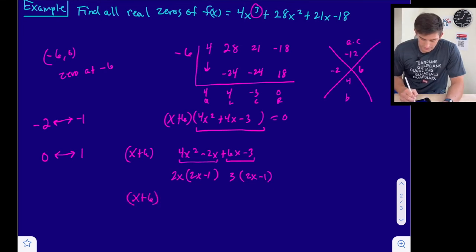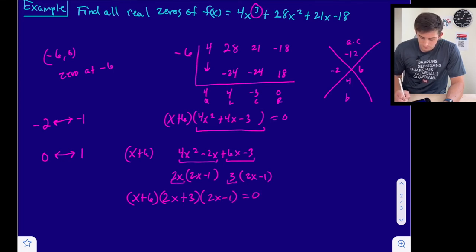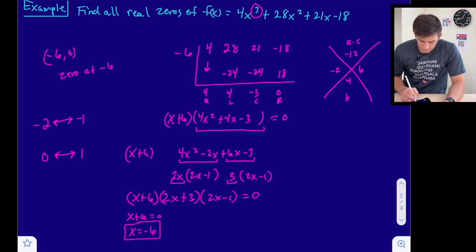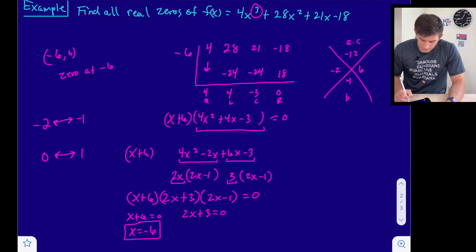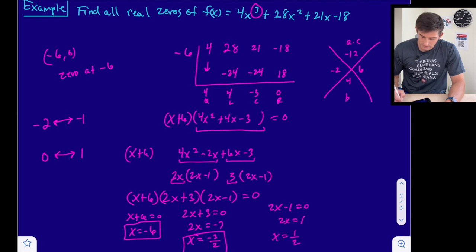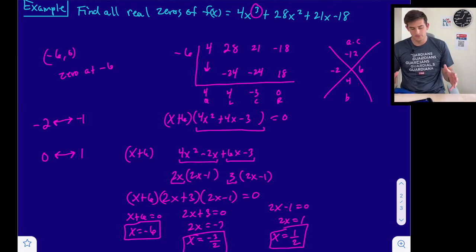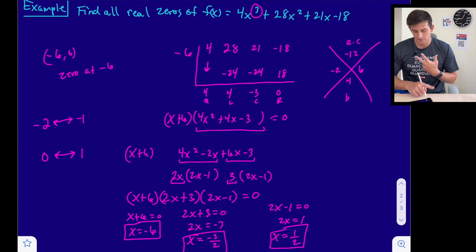Now we can write our three factors: x plus 6, 2x plus 3, and 2x minus 1, all set equal to zero. We already know x plus 6 equals zero gives x equals negative 6. Setting 2x plus 3 equal to zero: 2x equals negative 3, so x equals negative three-halves. Setting 2x minus 1 equal to zero: 2x equals 1, so x equals one-half. So our three real zeros are negative 6, negative 3 over 2, and 1 half. That is how you use the location principle, a graphing calculator, and synthetic division to locate all zeros of a polynomial function.